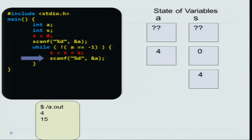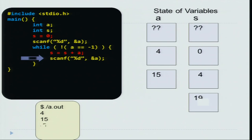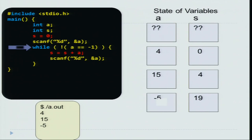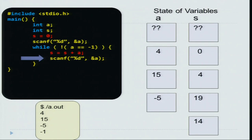Let us say the next number was 15. So a becomes 15 — a is not minus 1, therefore you enter the loop again and sum is now 4 plus 15 which is 19. Sum at any point of time is the sum of the numbers that we have read so far; we have read 4 and 15, so the sum is 19. Now you read the next number — let us say it was minus 5. Minus 5 is not minus 1, therefore you enter the loop again: s equal to s plus minus 5, so s becomes 14. Then you read the next number and let us say it was minus 1.